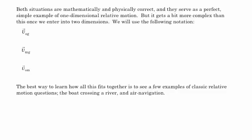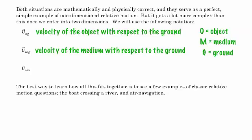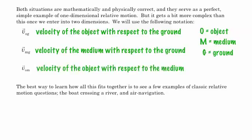But when we get into two dimensions, things get a little bit more complex. And so we have different notations. No matter what course you're taking or where you're studying physics, you're going to have all kinds of different notations for these two-dimensional vectors. And so V-O-G is, O stands for object, M for medium, and G for ground. So V-O-G would be the velocity of the object with respect to the ground. V-M-G is the velocity of the medium through which the object is moving with respect to the ground. And V-O-M would be the velocity of the object with respect to the medium.